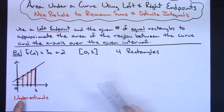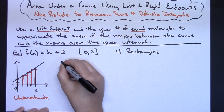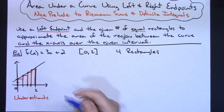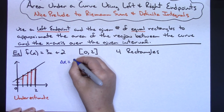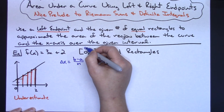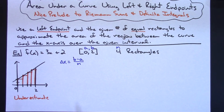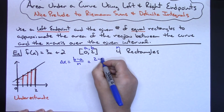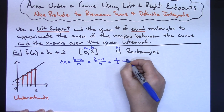Now we need to figure out what these endpoints are. Since they're equal, I can use a formula: delta x equals b minus a all over n, where a and b are the endpoints of the interval and n is the number of rectangles. So we have 2 minus 0 over 4, which gives a width of one half for each rectangle.